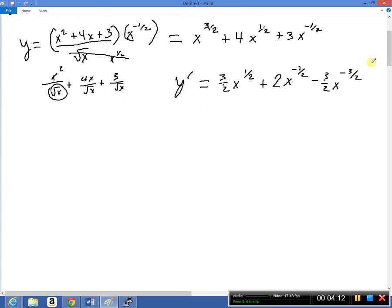Alright, next problem, we have to find the equation, find an equation of the tangent line to the graph of the curve y equals x to the 4th plus 2 e to the x at the point (0,2). So to get the equation of the tangent line, to get any equation, you need the slope and you need the point. Well, here's a point.